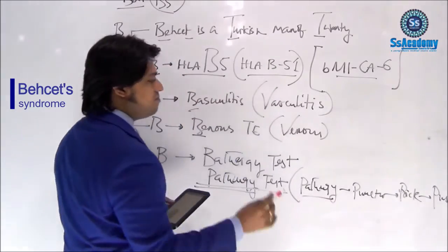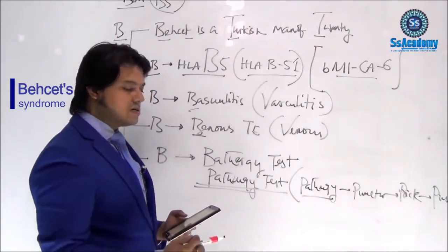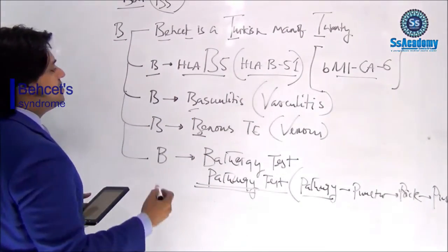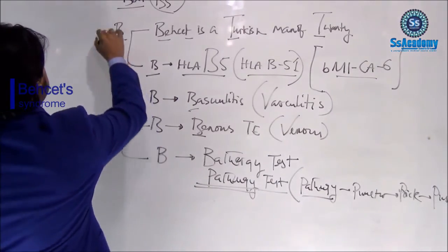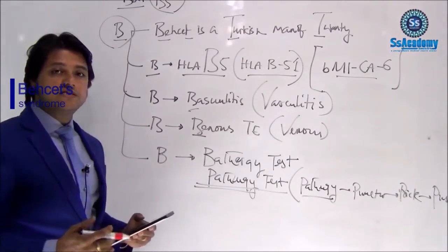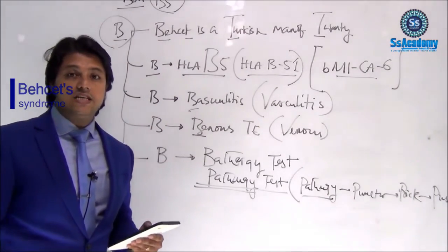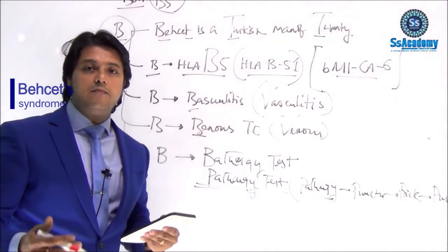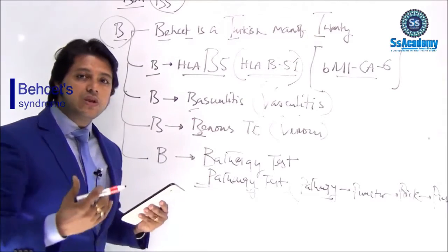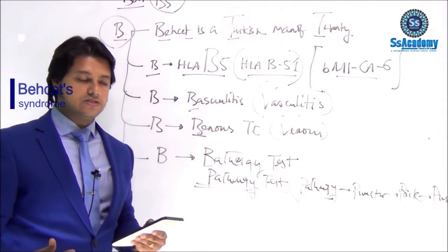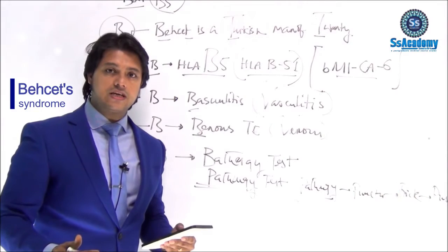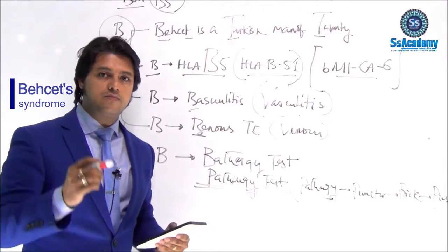So to summarize the five B's of Behçet's syndrome: first B — Behçet is a Turkish man of 20; second B — HLA-B5 / HLA-B51, and MICA6 allele; third B — vasculitis; fourth B — venous thromboembolism; and last B — pathergy test, which means puncture, prick, and pustule. Among all features, venous thromboembolism is especially important to remember.